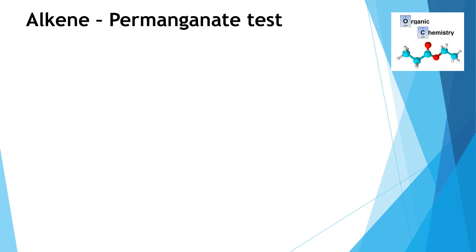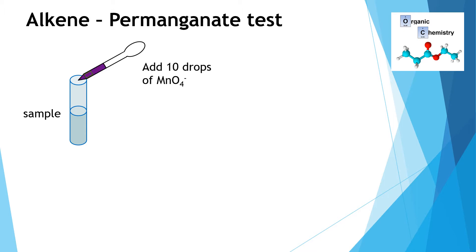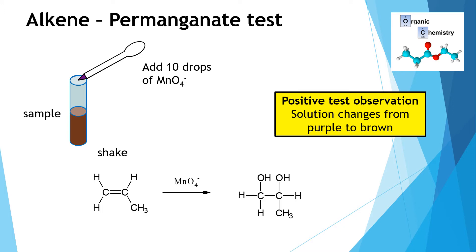The first test we're going to look at is a chemical test — the permanganate test. If we have an unsaturated hydrocarbon, an alkene or possibly an alkyne, we can take a sample and add some potassium permanganate or sodium permanganate — 10 drops of permanganate solution — and give it a shake. If the sample changes colour and goes brown, that means something has been oxidised. In this case, an alkene has been oxidised to a diol. This is a positive test to show the presence of a double bond or an alkene.